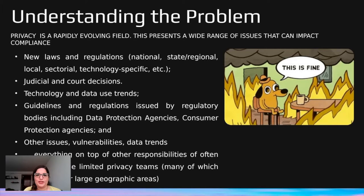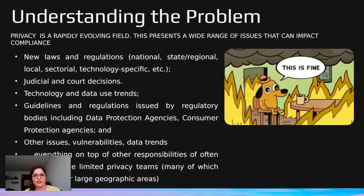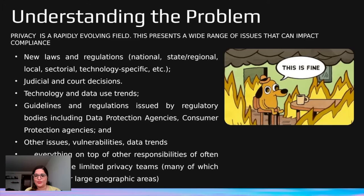First, understanding the problem: privacy, or data protection, or whatever you call it, is a topic that is changing very fast at a global scale, and it's a lot to keep track of. You have new regulations at a national level, sub-national level, regional, state, sector-specific. You have judicial court decisions, changes in technology uses and trends, guidelines issued by regulatory bodies — all of these things to keep track of as a privacy officer on top of everything else you're already doing. I found this is quite a problem, and often people end up responding ad hoc. The reason I developed this system is to make information come to you through very basic OSINT — and it's very accessible.